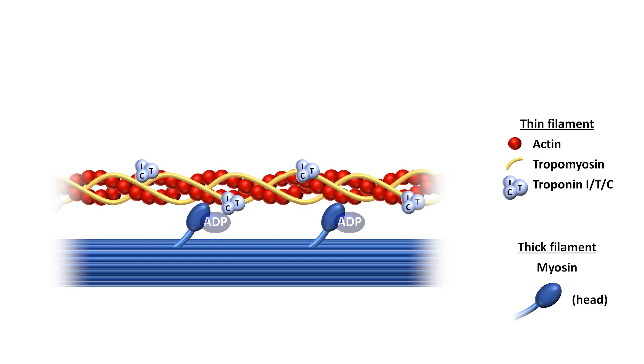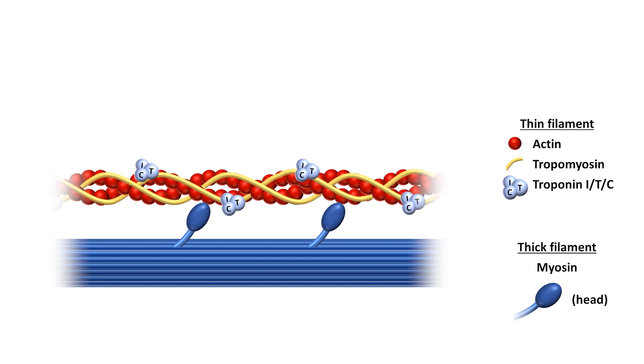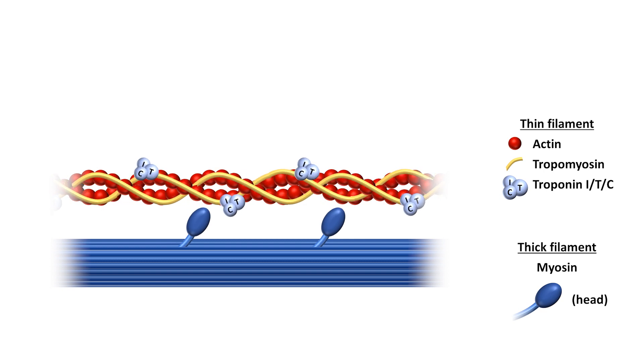When the cell is not in an excited state, it's believed that the tropomyosin shifts to physically block actin's binding site for myosin.